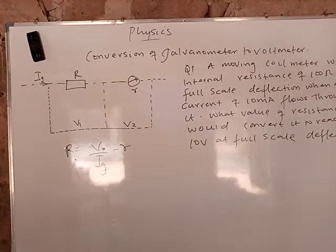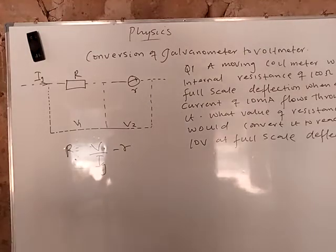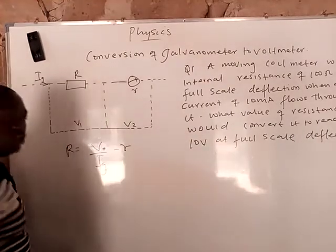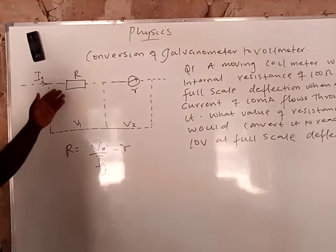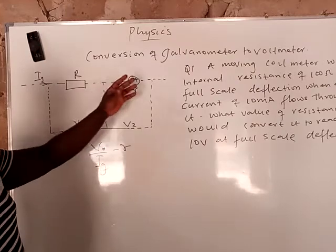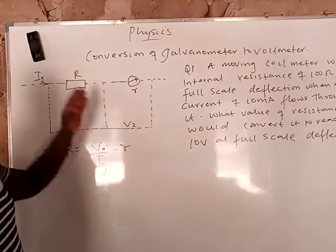This is the conversion of galvanometer to voltmeter. From the diagram, we believe in straight to the point, no long stories. This is a resistance. In order for you to convert a galvanometer to voltmeter, you need a resistance.